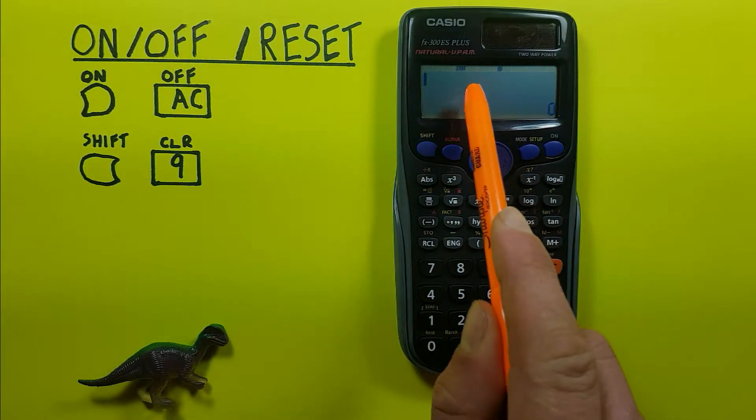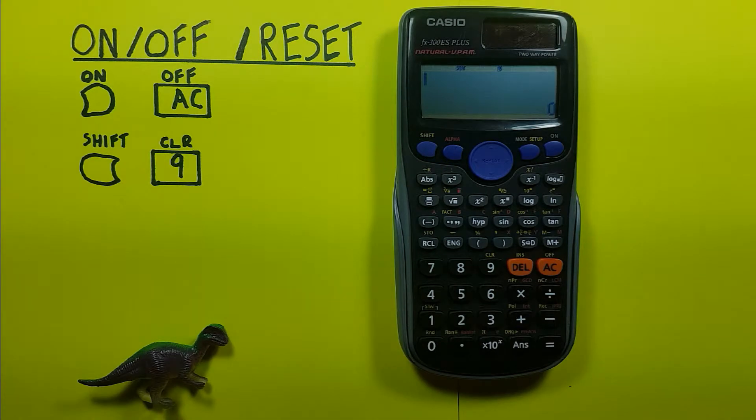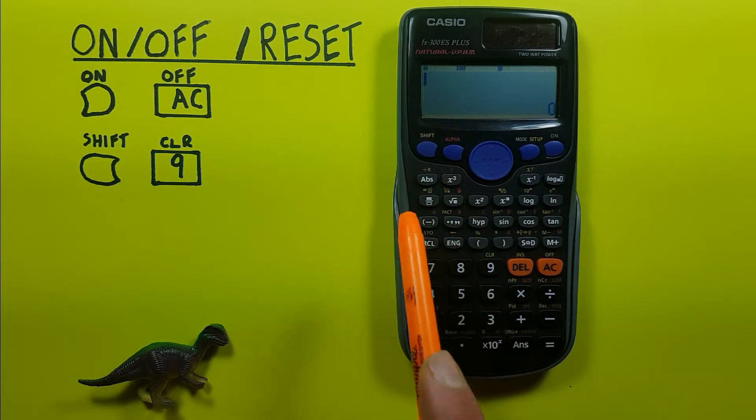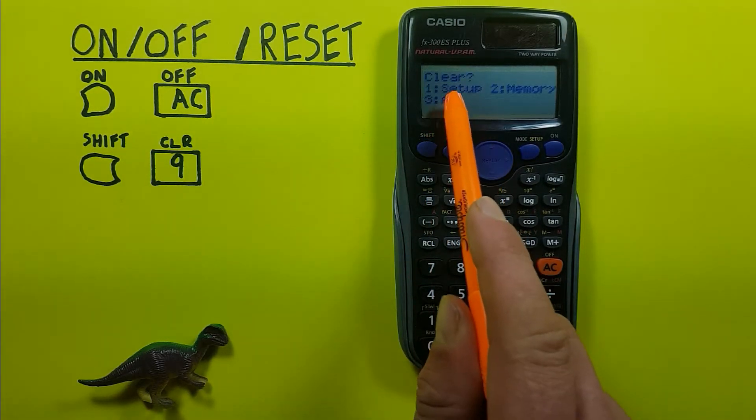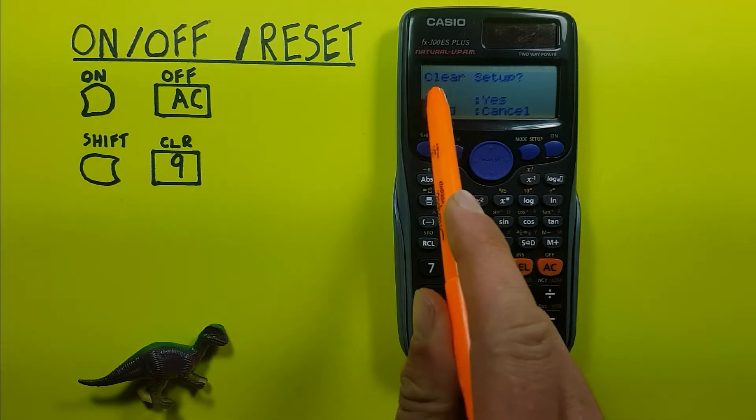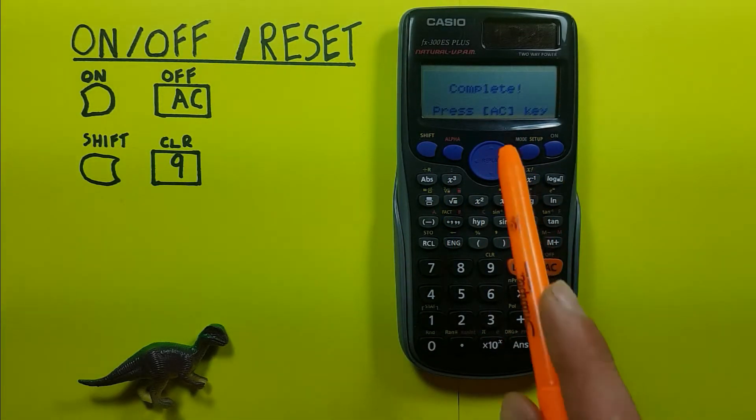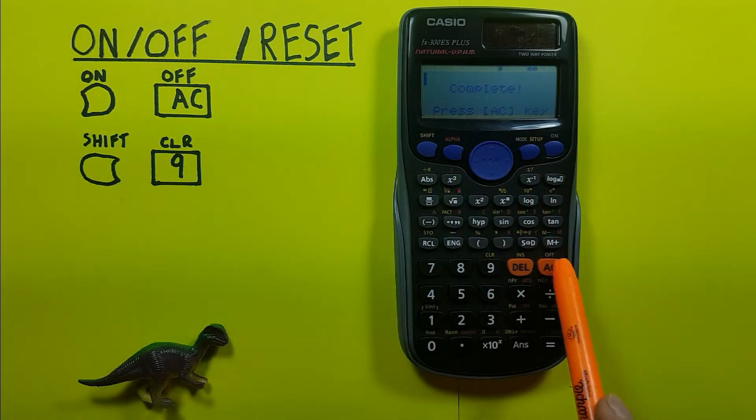You can see that our calculator is in stat mode. If we don't know how to reset this and want to go back to our standard calculation mode, we can press shift nine and choose number one, the setup. Again it'll ask us if we want to clear the setup. We can press equal. It'll say complete, so we press the AC key.